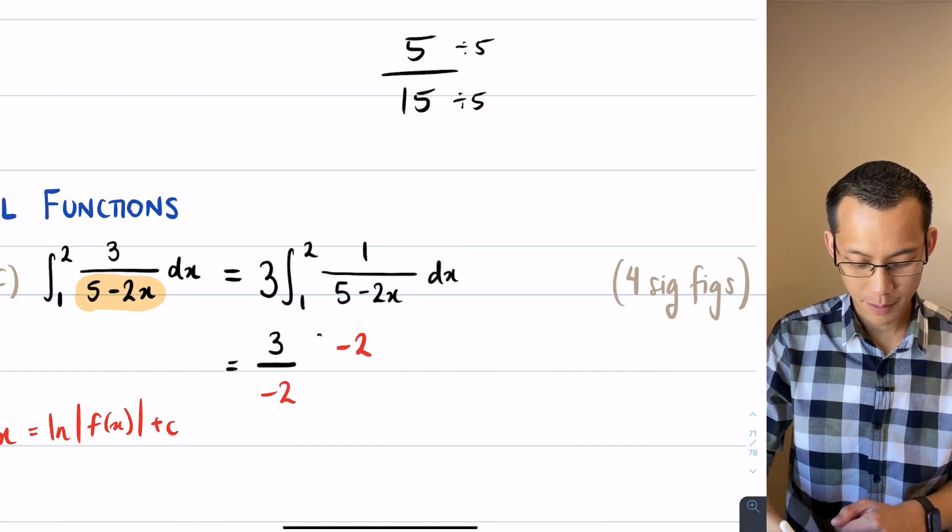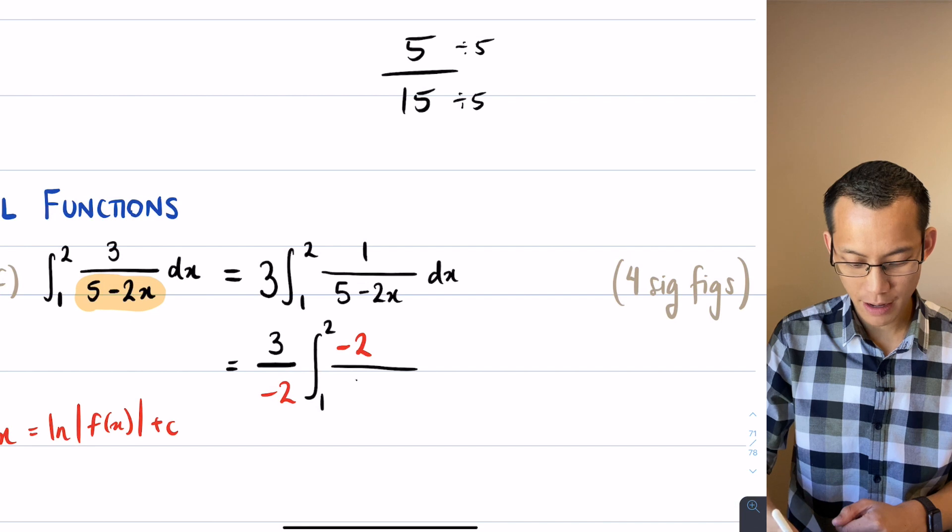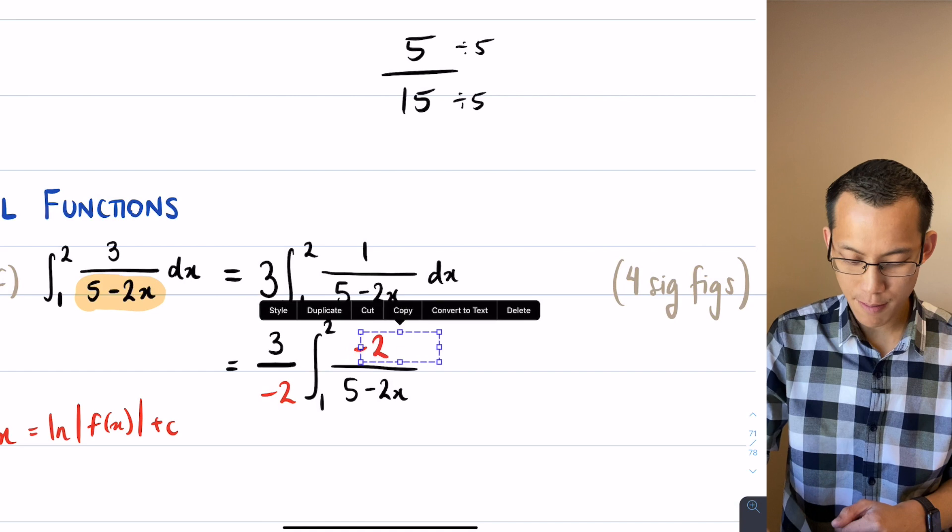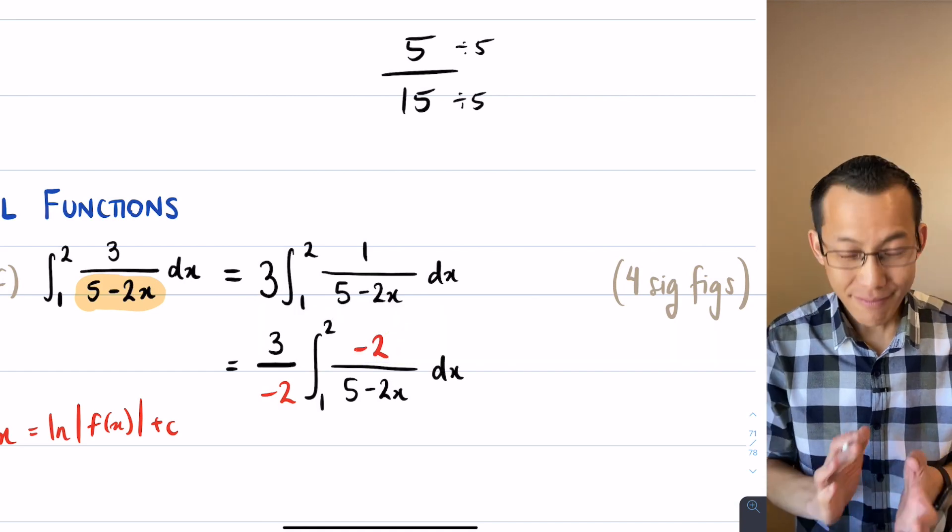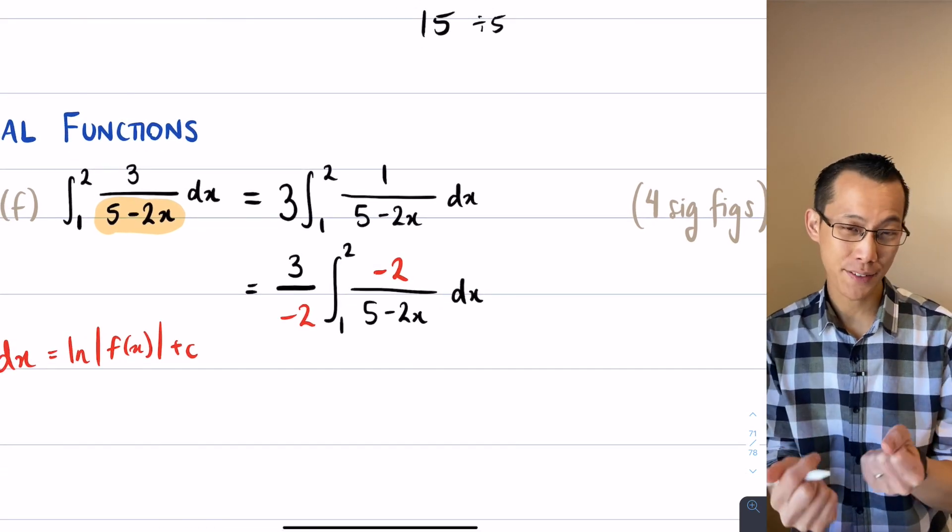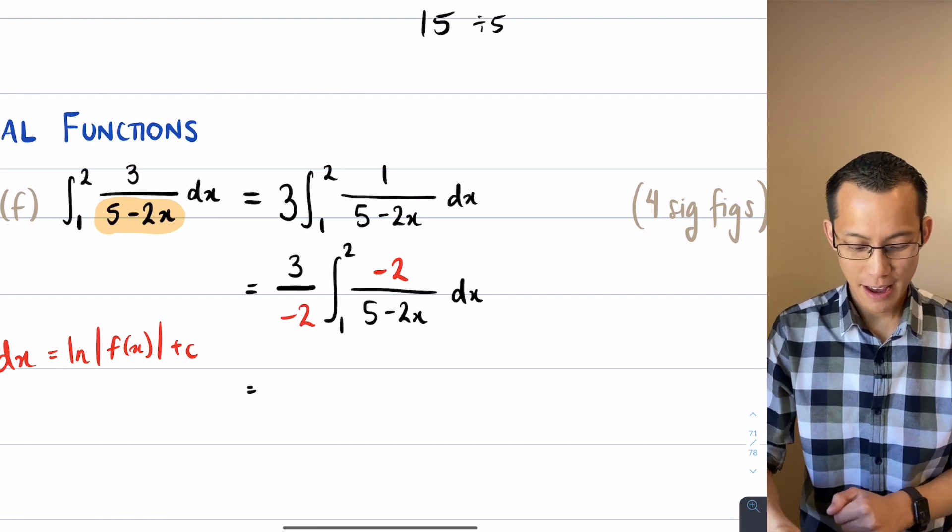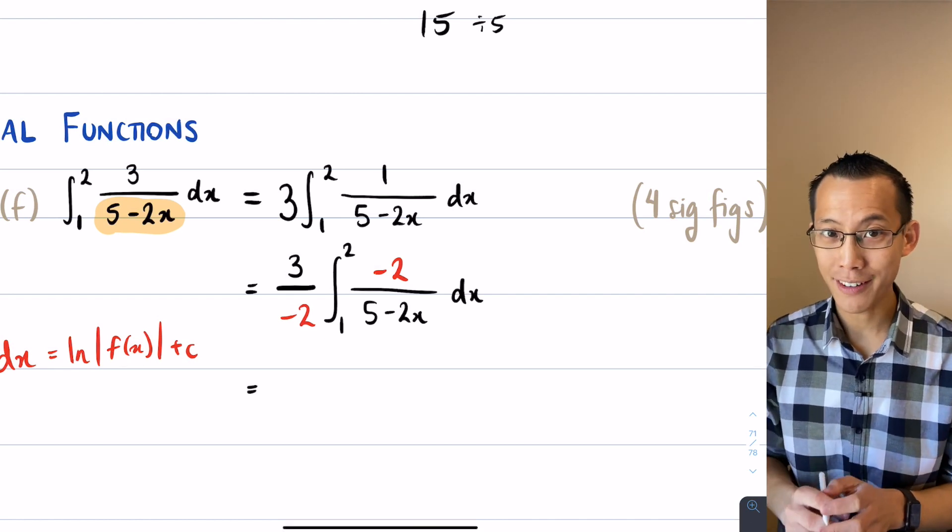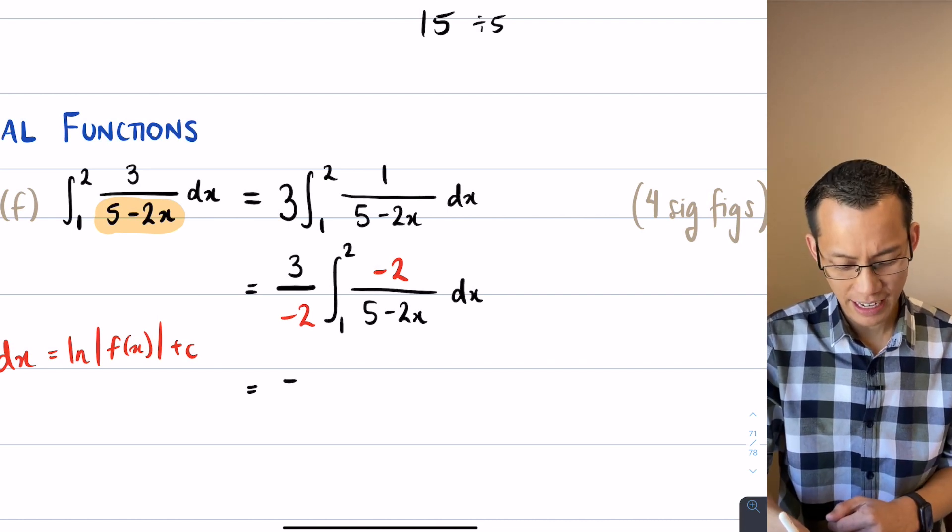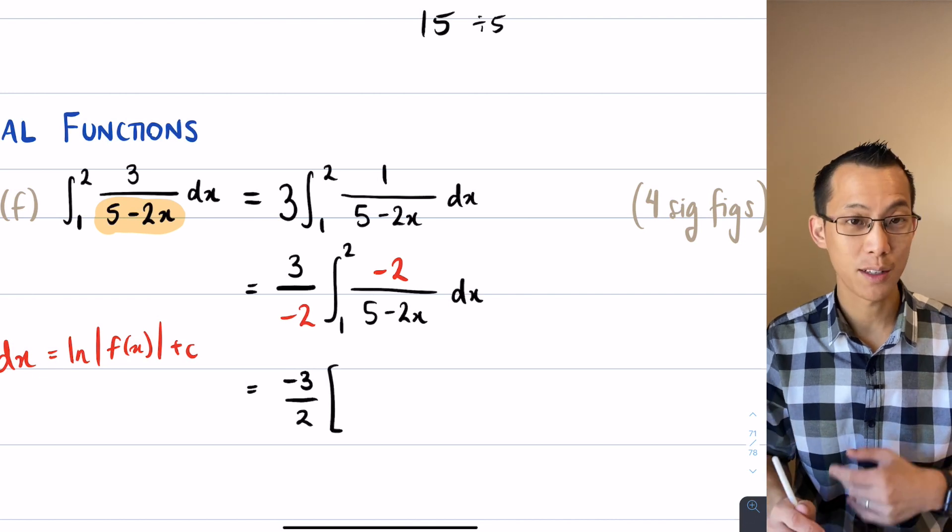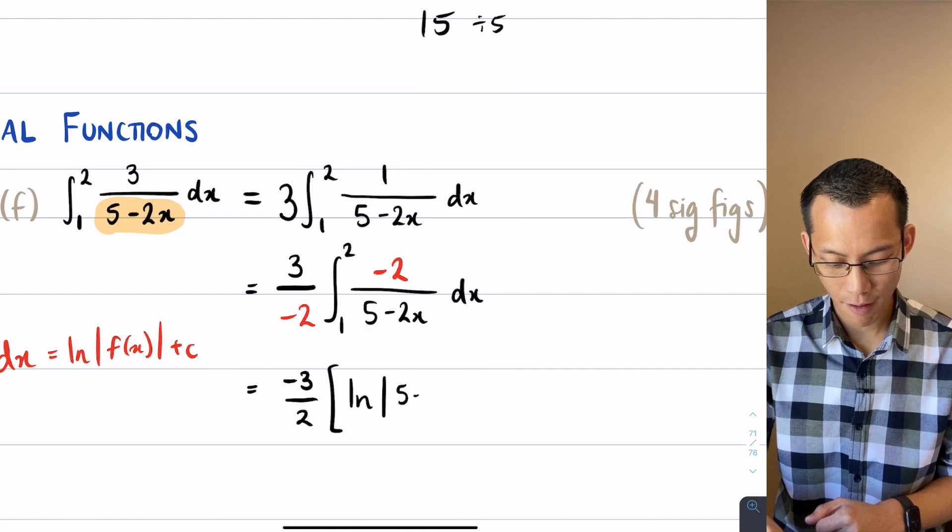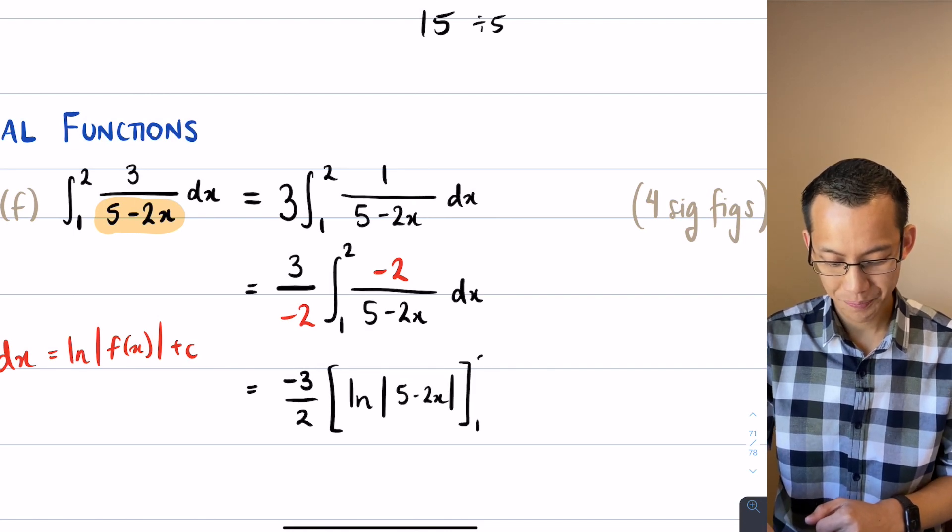So this is 3 out the front, I'm still integrating from 1 to 2, and then on the denominator I have 5 minus 2x. Hopefully you can see the colors make it clear what I'm doing—that negative 2 and that negative 2 balance out, but they're better for me from an integration standpoint because now inside the integral I've got f dash on f. Let's tidy up that constant coefficient at the front, let's write it as negative 3 over 2, big square brackets because now I'm actually doing the integration. It's log of the absolute value of 5 minus 2x, there we go, from 1 to 2.